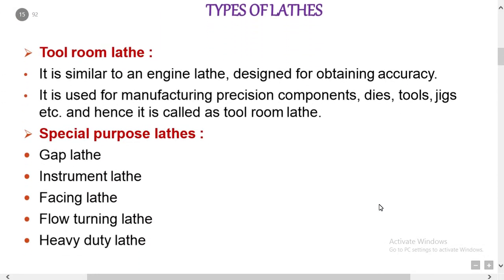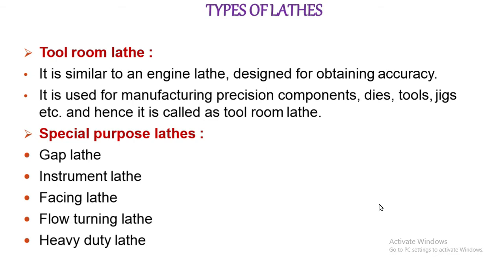The tool room lathe has main features similar to the engine lathe, but it is a very accurate lathe. Spindle speed ranges from very low to quite high, up to 2500 RPM. This lathe is usually used for precision work on tools, dies, and gauges, and in machining work where accuracy is needed. The machine is costlier than the engine lathe.